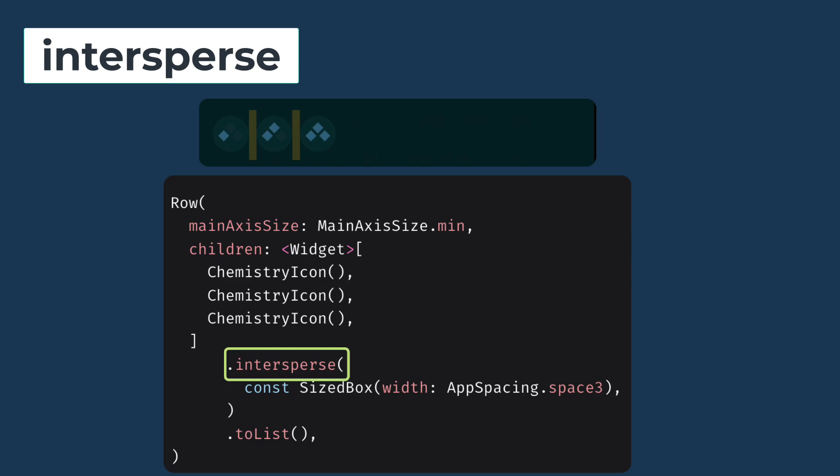It makes your code cleaner by reducing the need for for-loops or custom widgets to insert separators. It enhances code readability and maintainability. Instead of manually creating a list of items with separators, you can simply call dot intersperse items on the list.